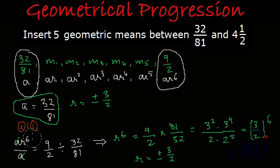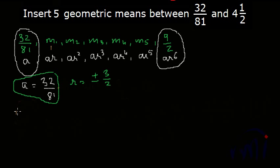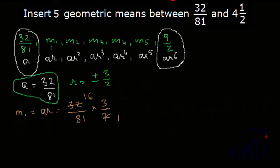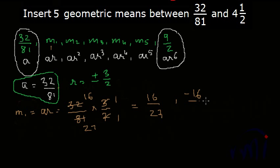The first geometric mean M1 = AR = (32/81) × (3/2). Calculating: 32×3 = 96 and 81×2 = 162, simplifying gives 16/27. If r = +3/2, M1 = 16/27; if r = −3/2, M1 = −16/27.